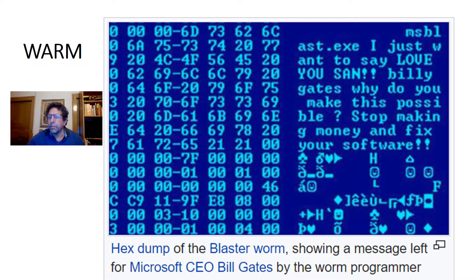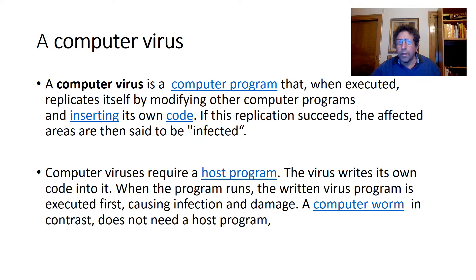Here is a worm — the Blaster worm — showing a message left for Microsoft CEO Bill Gates by the worm programmer. A computer virus is a computer program that, when executed, replicates itself by modifying other computer programs and inserting its own code. If this replication succeeds, the affected areas are then said to be infected.